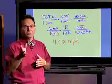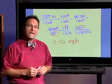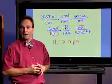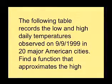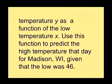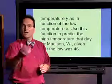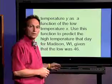Well, I hope that's the answer that you got when you worked on that problem yourself. What we're going to do now is explore curve fitting using our grapher. Let's take a look at an example. The following table records the low and high daily temperatures observed on 9-9-1999 in 20 major American cities. Find a function that approximates the high temperature, which we'll call Y, as a function of the low temperature, which we'll call X. Use this function to predict the high temperature that particular day for Madison, Wisconsin, given that the low temperature was 46.